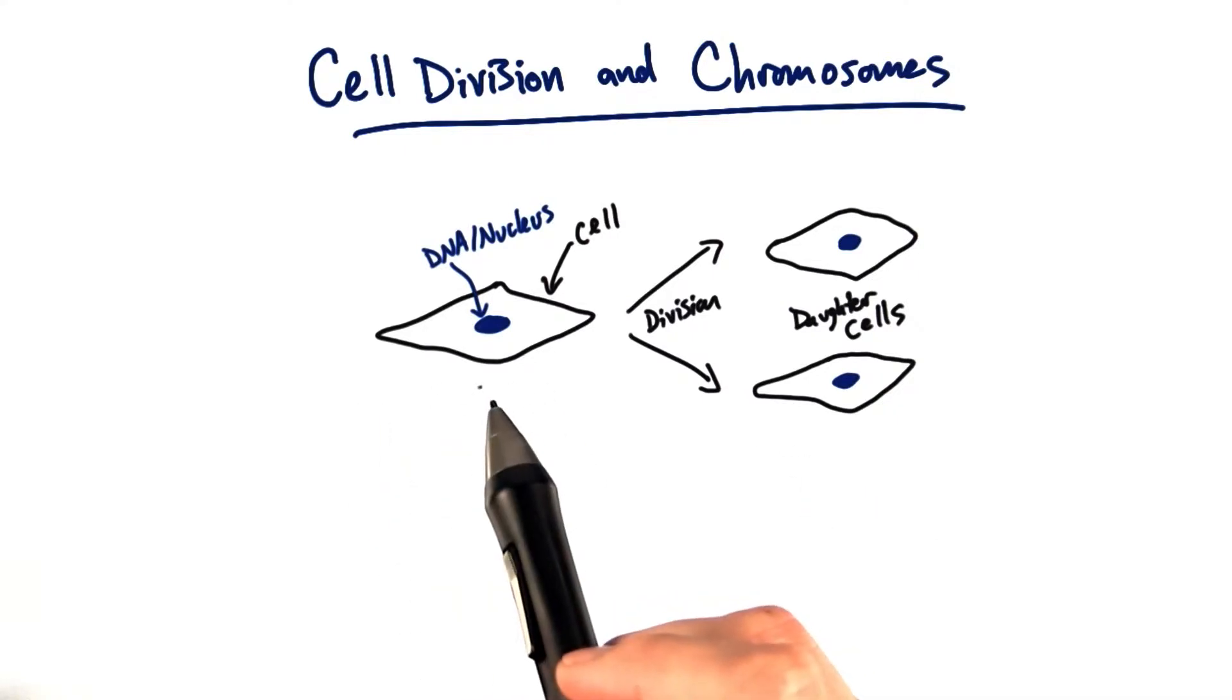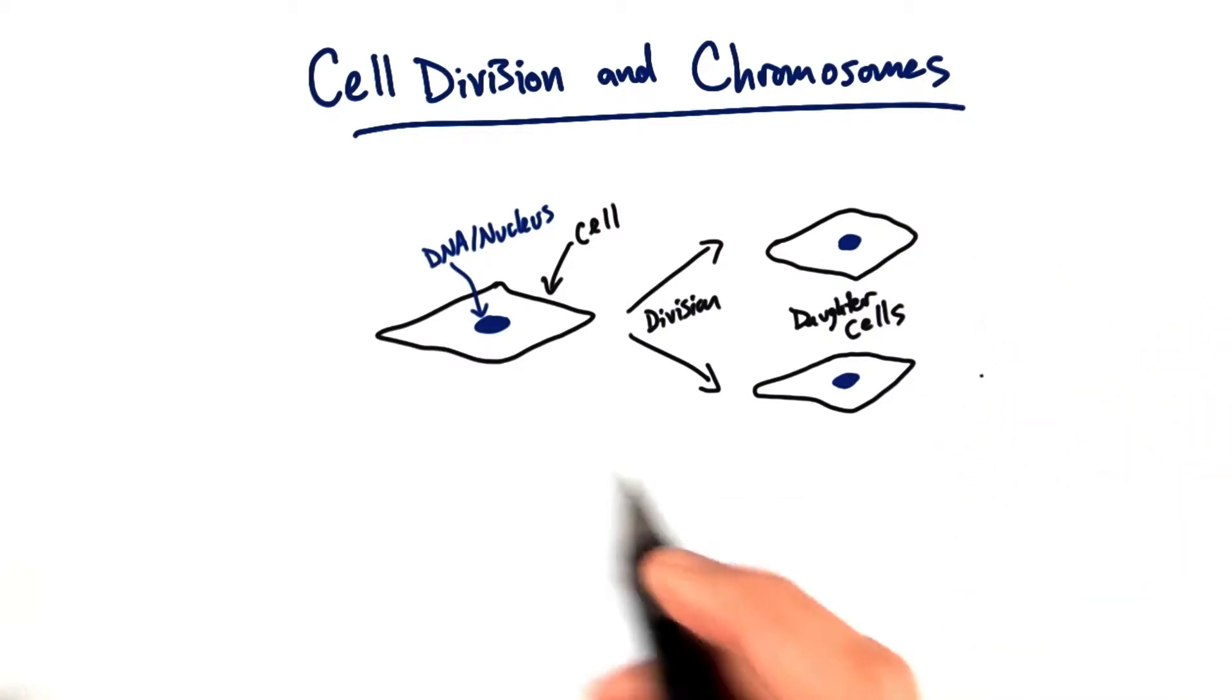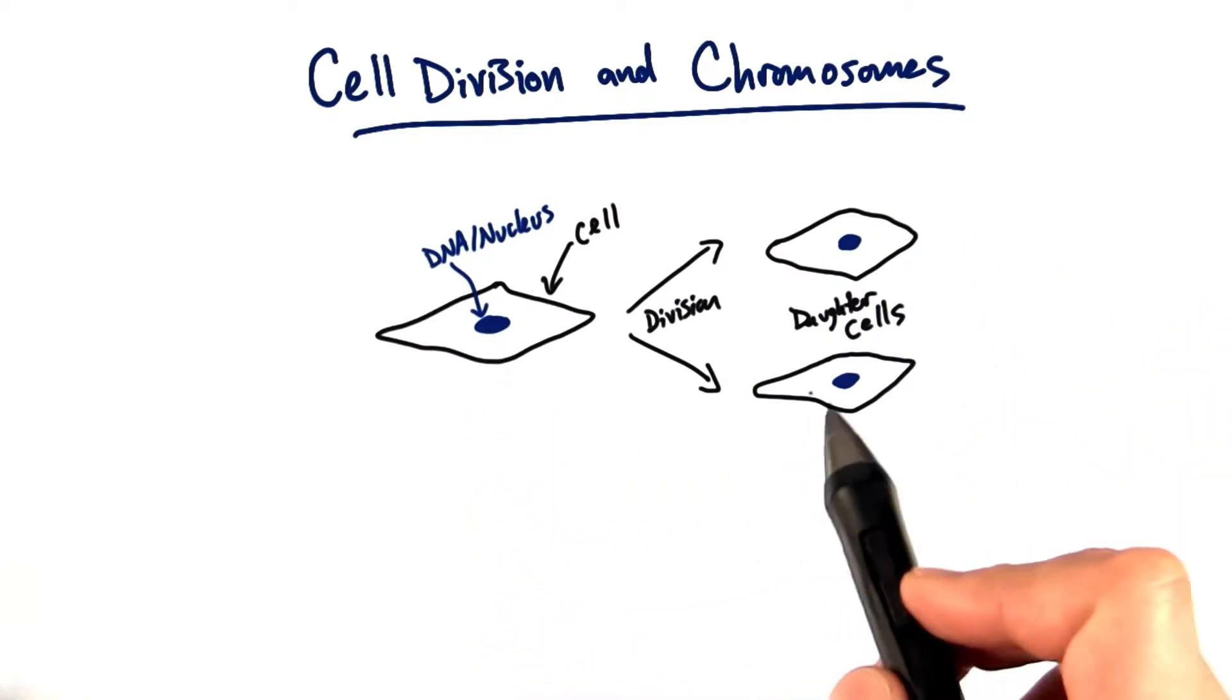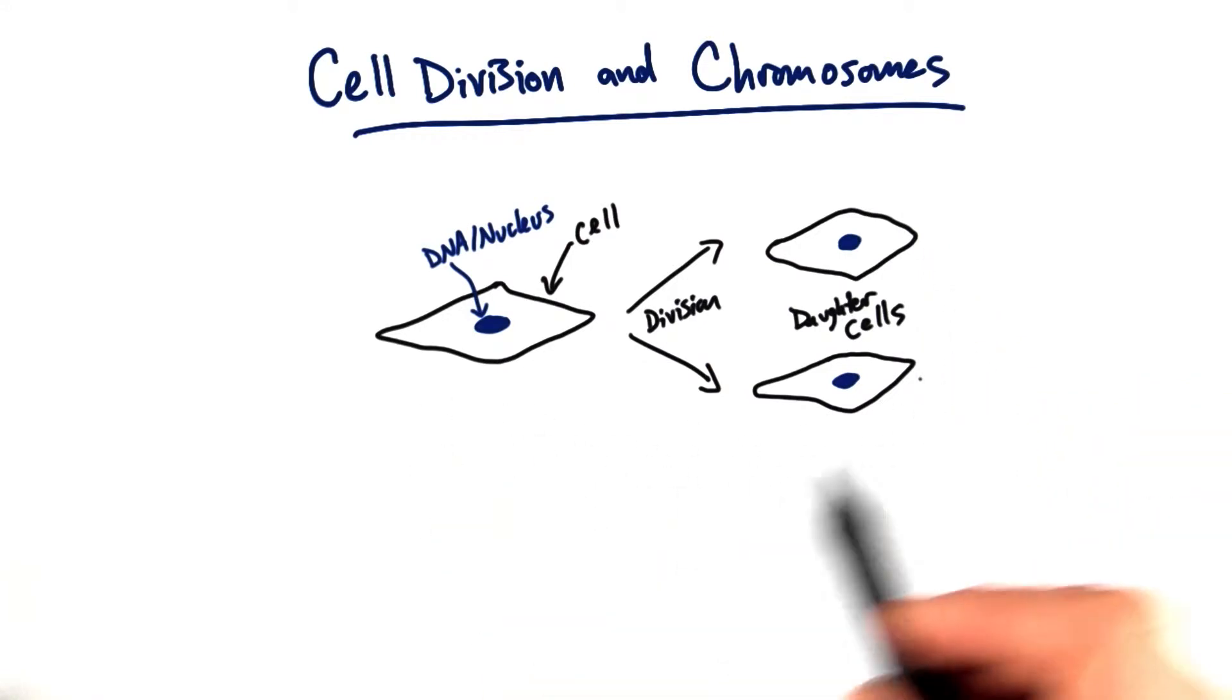Where one cell will actually end up dividing into two daughter cells. And so for us to understand how the DNA gets passed down to these daughter cells, we need to understand a bit more about this whole process in general.